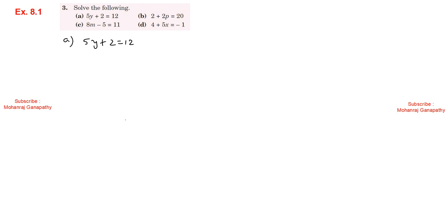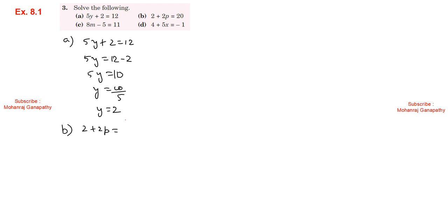Exercise 8.1, Sum number 3. Part a: 5y plus 2 equals 12. So 5y equals 12 minus 2, giving 5y equals 10. Then y equals 10 divided by 5, so y equals 2. Part b: 2 plus 2p equals 20. So 2p equals 20 minus 2, giving 2p equals 18. Then p equals 18 divided by 2, so p equals 9.